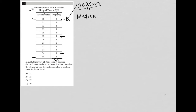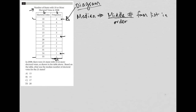A median is basically the middle number from a list in order — whether ascending or descending doesn't matter as much as knowing that once you've chosen an order, you're looking for the middle number. A lot of students make mistakes with questions like this because they don't understand how frequency relates to the data.